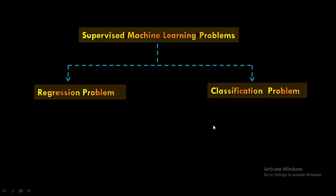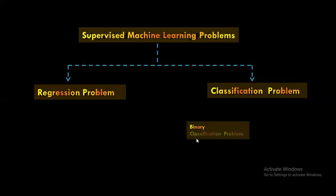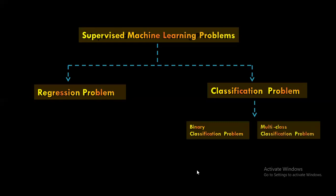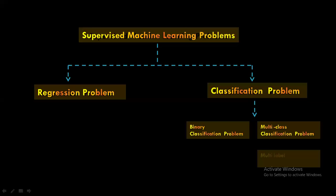Next is the classification problem. Within classification, there are three different types of problems we can solve: binary classification, multi-class classification, and multi-label classification. We will start by understanding the binary classification problem, which will also help clarify what classification is all about. Here is the vehicle insurance dataset, which is used for fraud detection through binary classification.